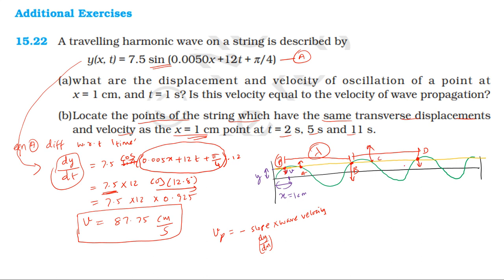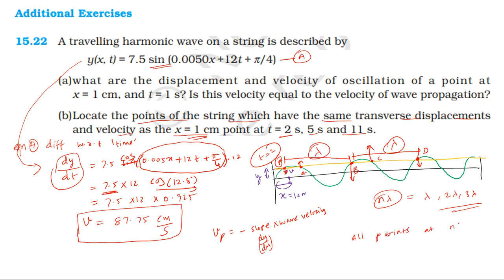Every lambda distance, n-lambda distance, the displacement and velocity repeat. Suppose it is at 2 seconds — in the same way, at x equal to 1 cm, the displacement is the same. For every lambda distance, same displacement and same velocity occur. All points at distance n-lambda (where n equals plus or minus 1, plus or minus 2) have the same displacement and velocity.